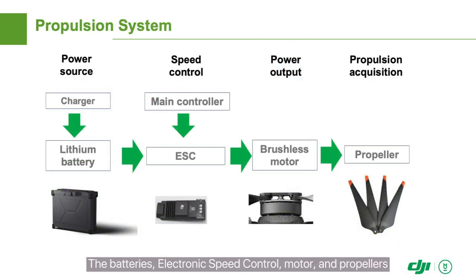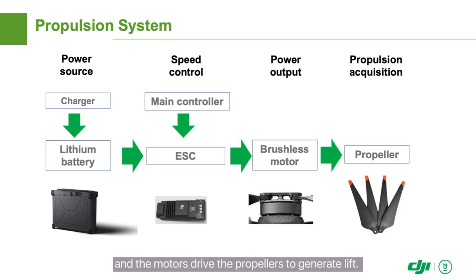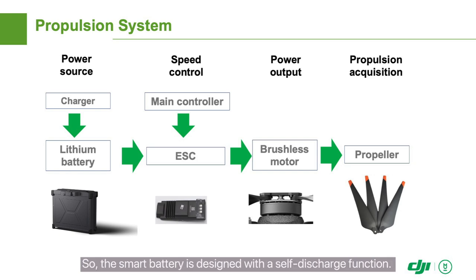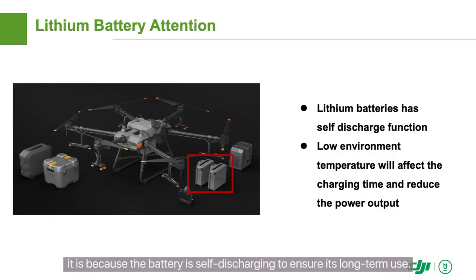The batteries, electronic speed control, motor, and propellers together make up the power system of the Agris drones. The lithium battery provides power. The ESC controls the motor. And the motors drive the propellers to generate lift. Keep in mind that the lithium battery shouldn't remain fully charged for a long time, so the smart battery is designed with a self-discharge function. If you find that the rear panel heats up, it is because the battery is self-discharging to ensure its long-term use.